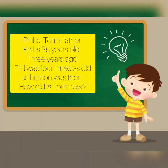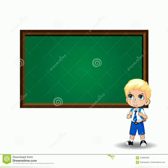The problem goes like this: Phil is Tom's father. Phil is 35 years old. Three years ago, Phil was four times as old as his son. How old is Tom now? By applying Polya's first step, we need to understand the problem.